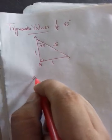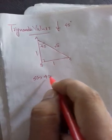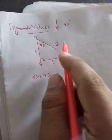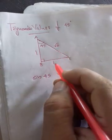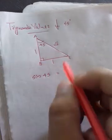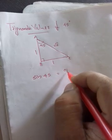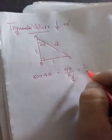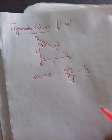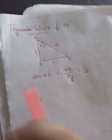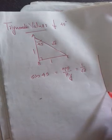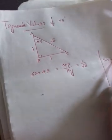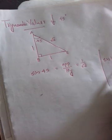We are taking sin 45. Sin means opposite by hypotenuse. That is opposite by hypotenuse - the value is 1 by root 2. So sin 45 is 1 by root 2.